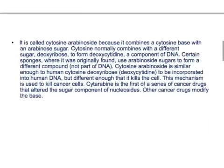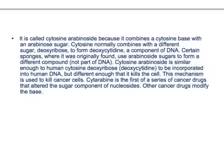It is called cytosine arabinoside because it combines a cytosine base with an arabinose sugar. Cytosine normally combines with a different sugar, deoxyribose, to form deoxycytidine, a component of DNA. Certain sponges, where it was originally found, use arabinose sugar to form a different compound. Cytosine arabinoside is similar enough to human cytosine deoxyribose to be incorporated into human DNA, but different enough that it kills the cell.